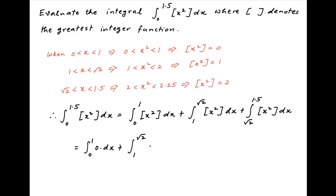0 · dx. The second term is the integral from 1 to √2 of 1 · dx. And the third term is the integral from √2 to 1.5 of 2 · dx.